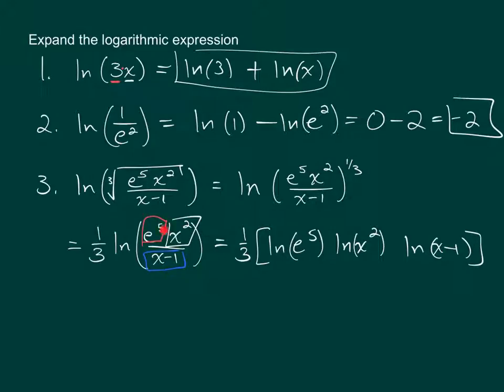Now, since the base e and the base x are in the numerator, both of these logs will be positive. And since the x minus 1 base is in the denominator, the log that contains it will be negative.